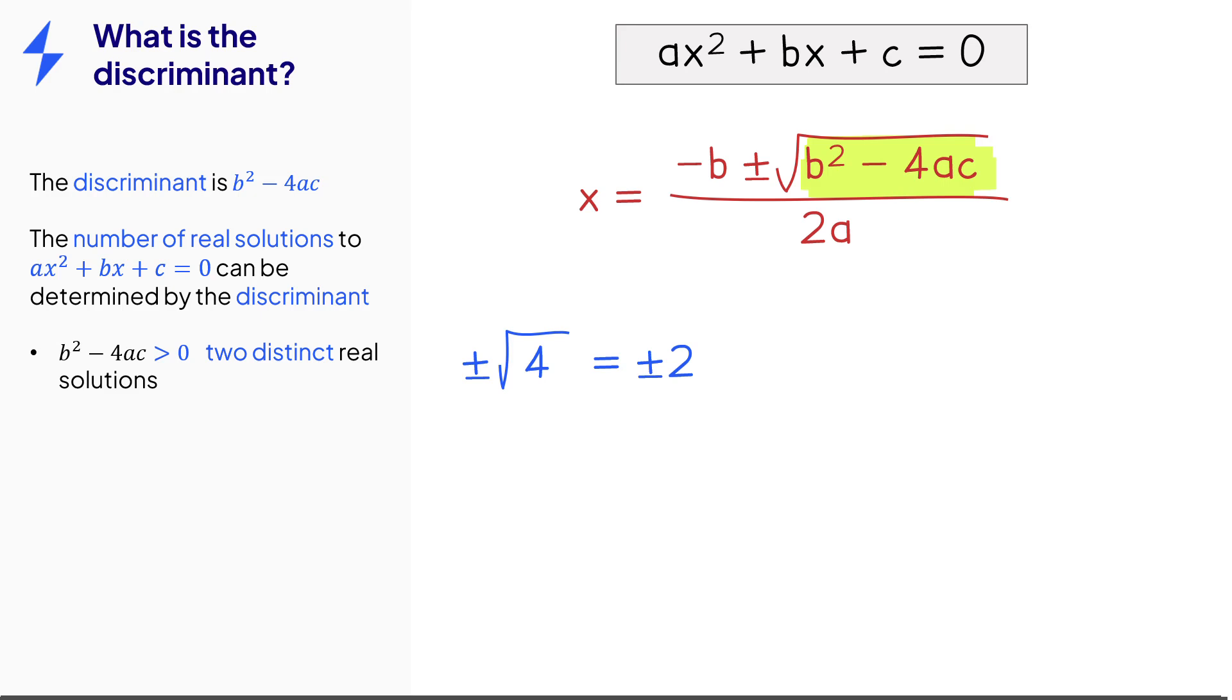If the discriminant is zero, then there will just be one square root. So therefore, the formula will lead to just one repeated real solution.